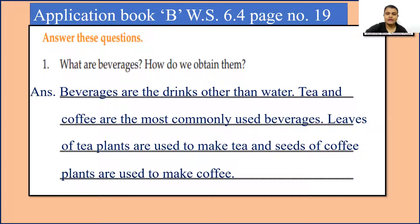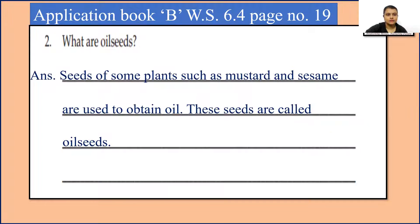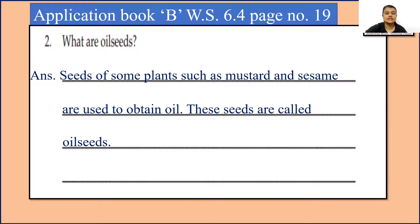Now we will move to the next question: What are oil seeds? Seeds of some plants, such as mustard and sesame, are used to obtain oil. That is why all these seeds are called oil seeds.